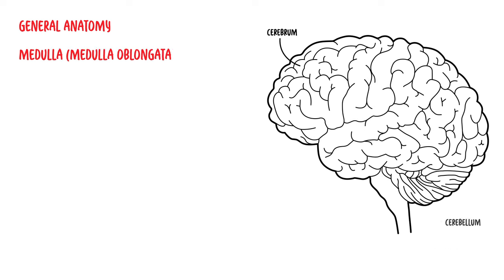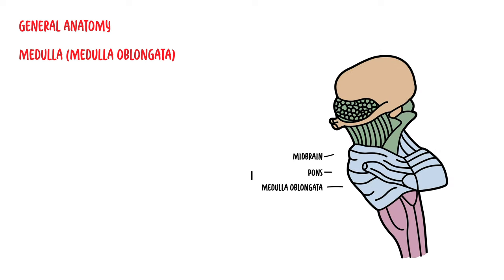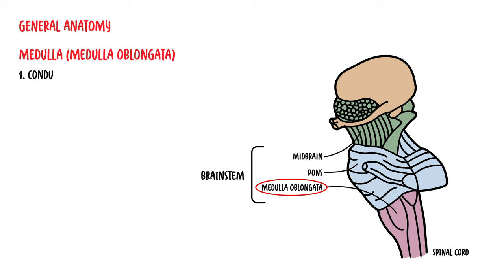The medulla, or medulla oblongata, is one of the three sections that make up the brainstem. Of the three sections, it is the most inferior and is continuous with the pons above and the spinal cord below.